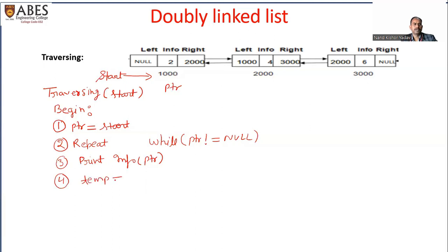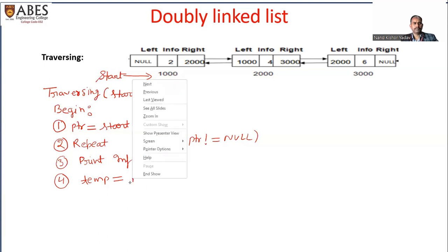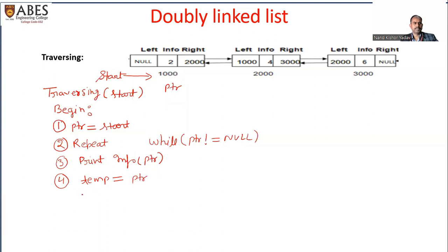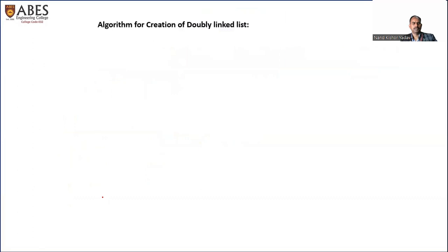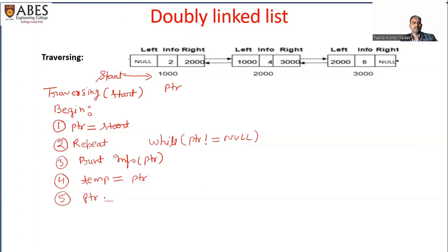In the fourth step, we use a temporary variable temp. Using this temporary variable we can also enable backward traversal, as it will hold the previous value of ptr. So we set temp equal to ptr. In the fifth step, we move the pointer variable ptr forward: ptr is equal to right of ptr. We repeat steps three, four, and five to move from the starting node to the last node — this completes the forward traversal.